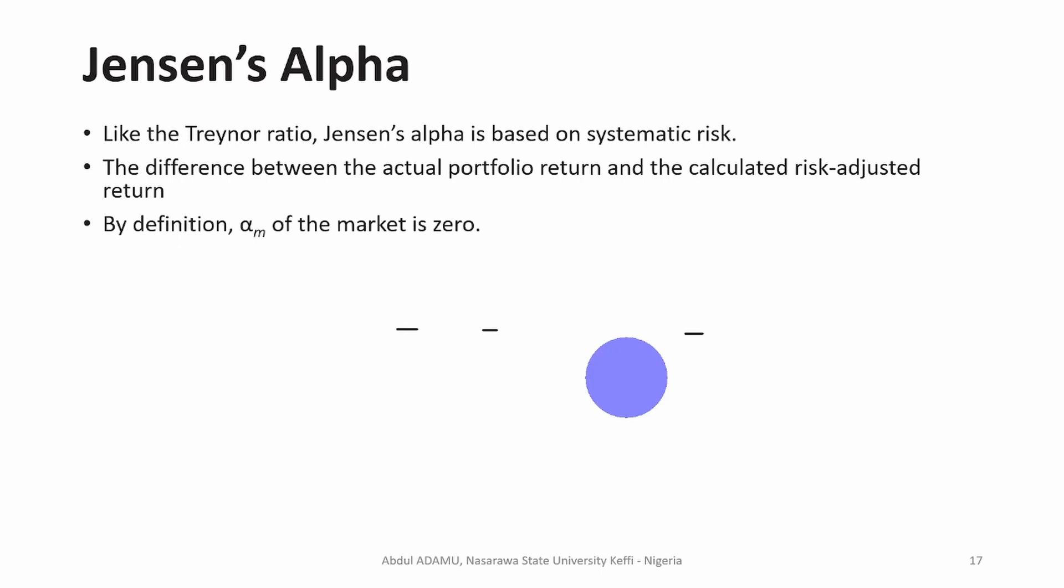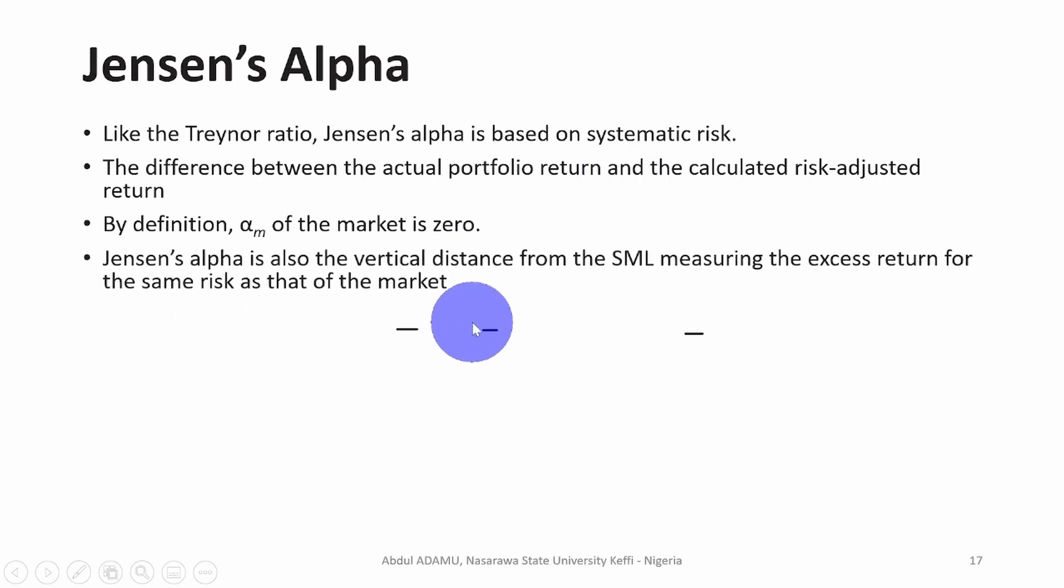By definition, the alpha of the market is equal to zero. So Jensen alpha is also the vertical distance from the security market line, measuring the excess return for the same risk as that of the market.